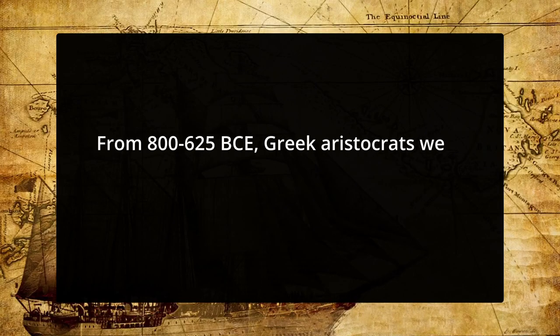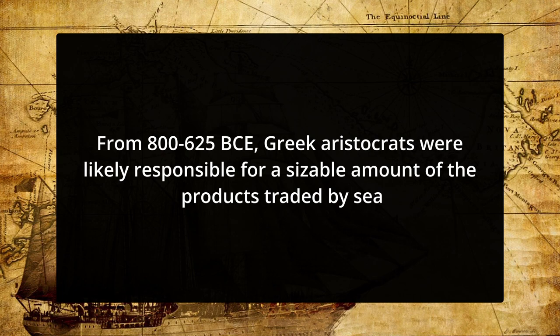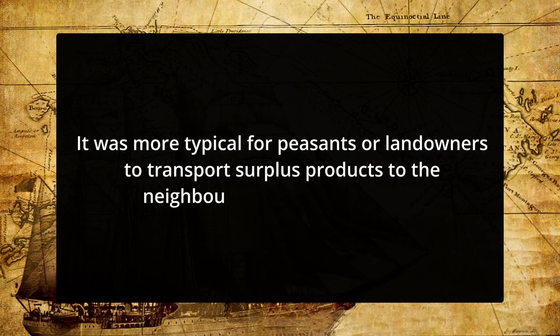From 800 up to around 625 BCE, Greek aristocrats were likely responsible for a sizable amount of the products traded by sea, sailing in their long ships with other nobles and even sometimes with their dependents. In ancient times, it was more typical for peasants or landowners to transport surplus products to the neighbourhood market for sale. When local marketplaces were unavailable, they chose the sea, but only when those markets were inconveniently situated. This demonstrates that unlike aristocrats, for whom commerce is merely one of a variety of occupations, independent maritime traders and agency traders alike go to sea mostly, if not entirely, in order to trade.